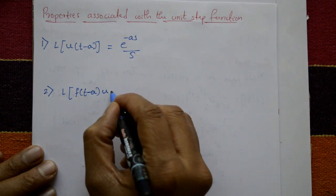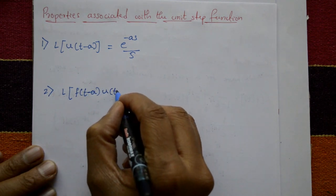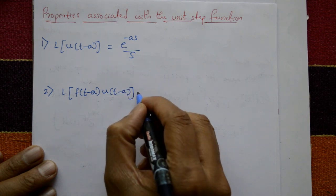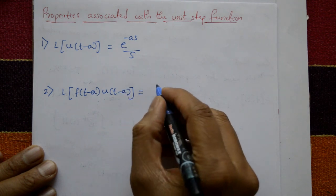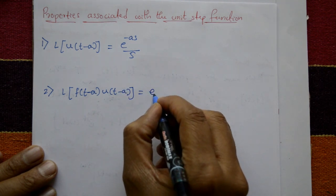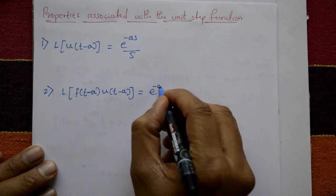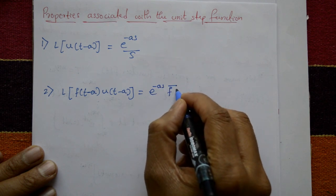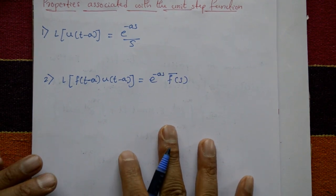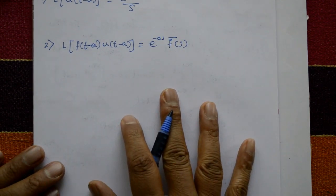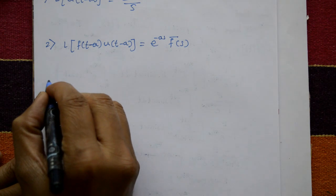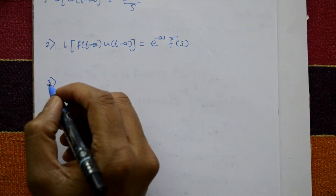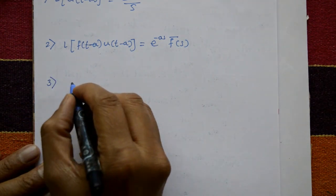Second property: Laplace of f(t minus a) into unit step function u(t minus a) is equal to e to the power minus as into F(s).